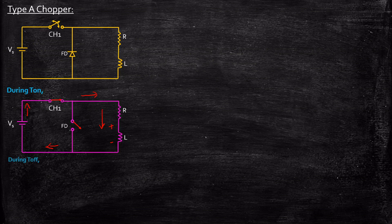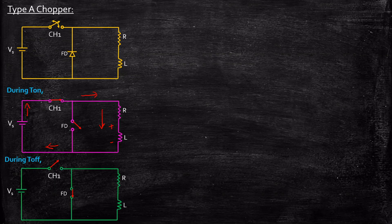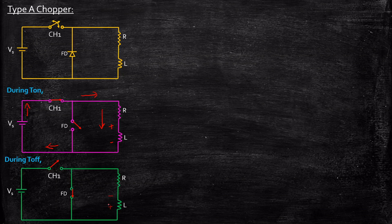Now let's take a look at what happens during turn-off. During turn-off, I am going to turn off this particular chopper CH1 by removing the gate pulse. In that case this will act as an open circuit. The inductor that was having a polarity plus and minus will reverse its polarity because it had charged previously, and according to the property of Lenz's law it will not allow sudden change in current — it will reverse its polarity and ensure that the current is still flowing in the same direction as before.